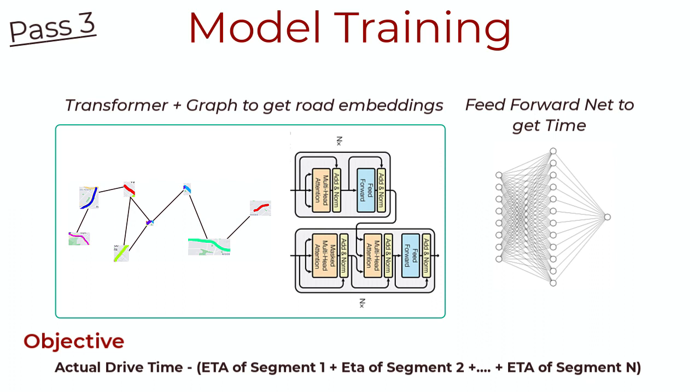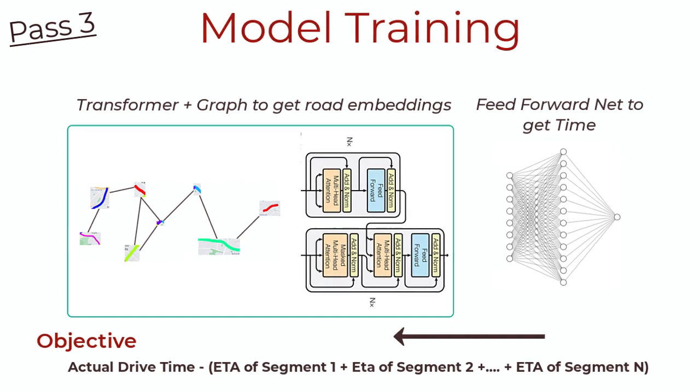We can minimize this via back propagation, since this entire behemoth of a network is still a network that is connected to each other. We can learn by back propagation of the weights through the feedforward net, all the way back to the transformer network. Now to wrap up, how exactly do we make inference and predictions of ETA?